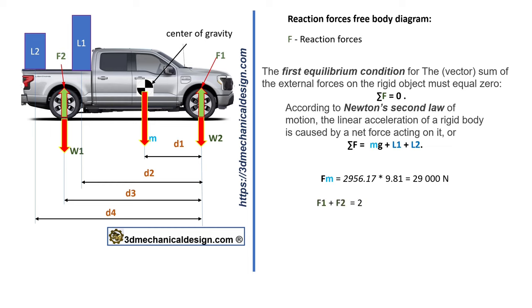F1 plus F2 equals 29,000 newtons plus 9,000 newtons plus 1,000 newtons equals 39,000 newtons. F1 equals 39,000 newtons minus F2.